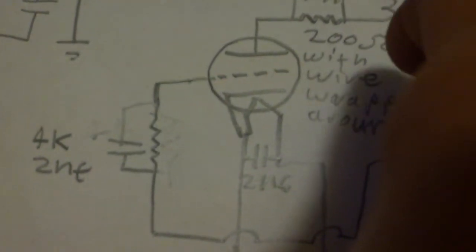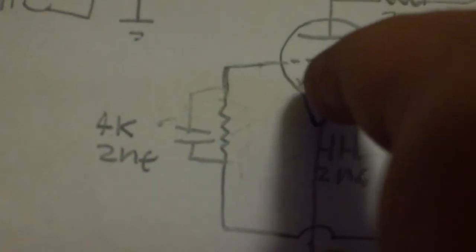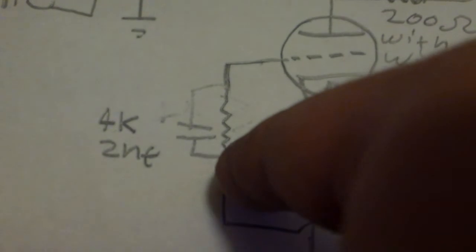The tube is a 5946, a high-gain triode. From the grid of the tube, it goes through a 4K-ohm resistor and a 2-nanofarad capacitor.